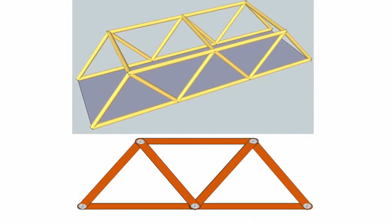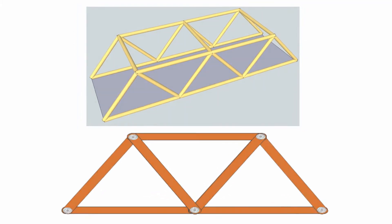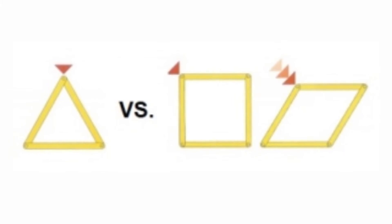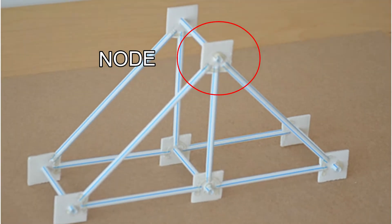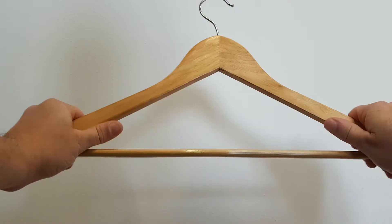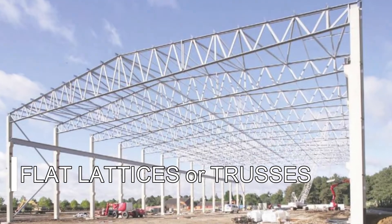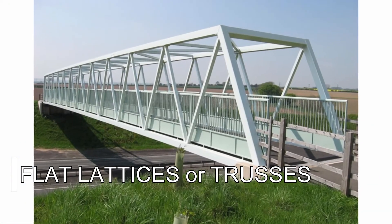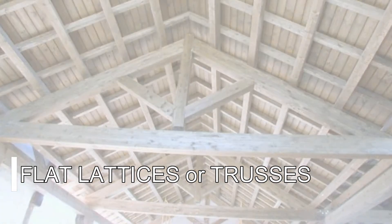Triangular structures are formed by rigid bars joined together, forming triangles. They are widely used because the triangle is a geometrically non-deformable figure. The point where the bars are joined is called a node. These nodes can be jointed or rigid. A jointed node allows the angle between the bars to be modified, while a rigid one does not. Triangular structures can be flat, consisting of bars that form several triangles joined together — usually called flat lattices or trusses.